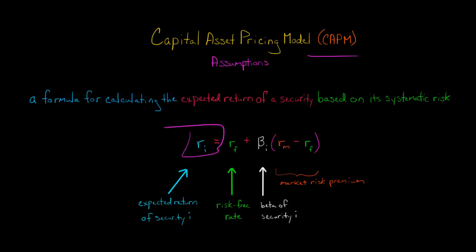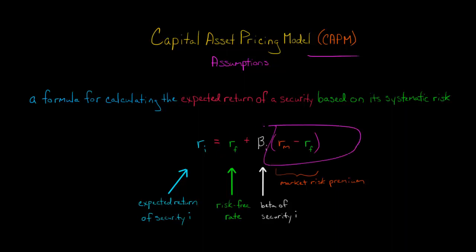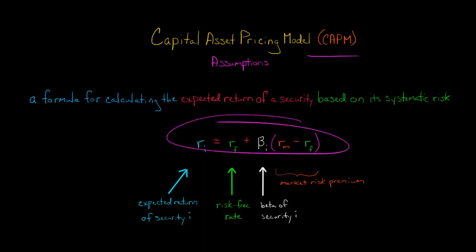The cost of capital equals the risk-free rate of return plus the beta of the security times the market risk premium, which is the expected return of the market minus the risk-free rate. So this is CAPM.